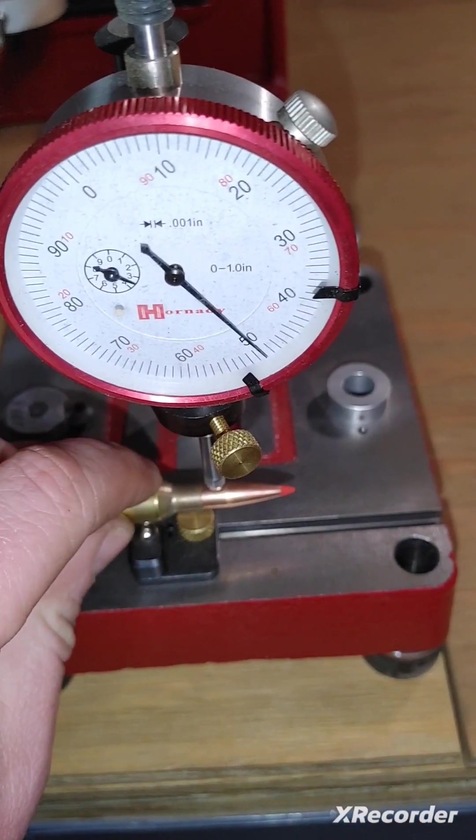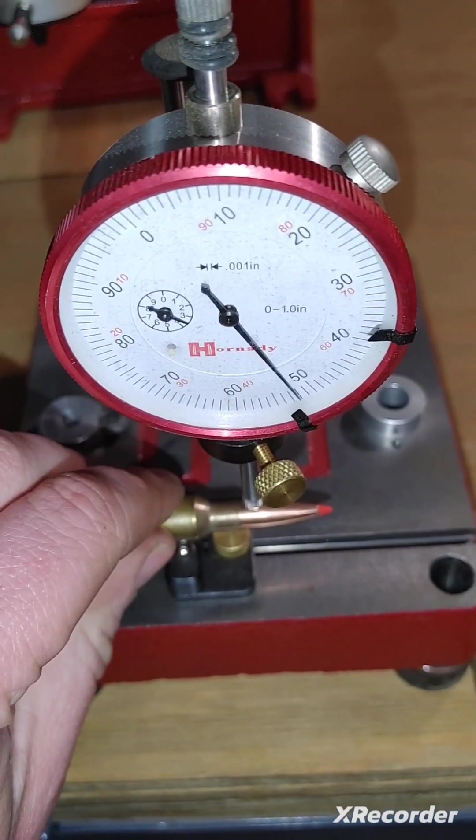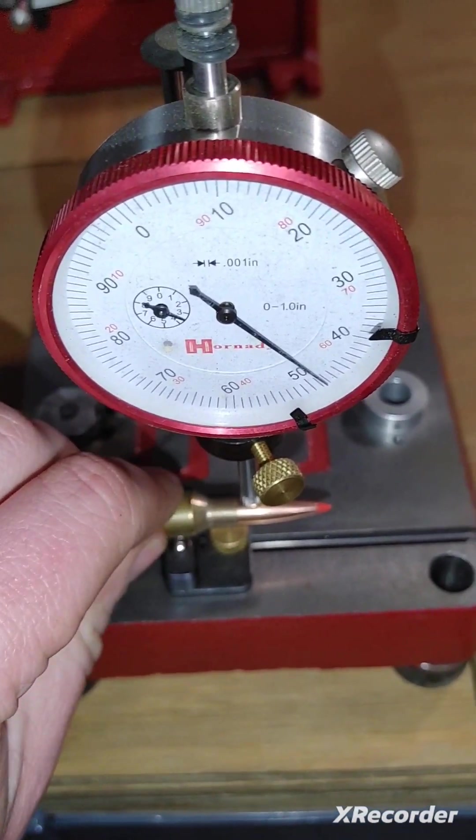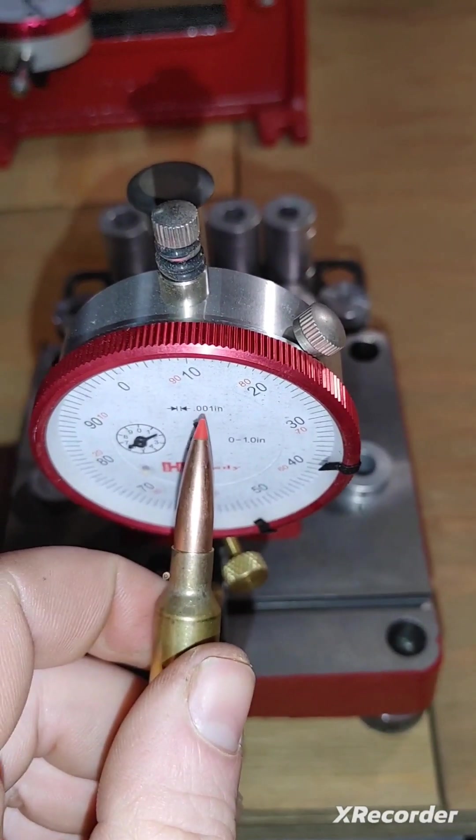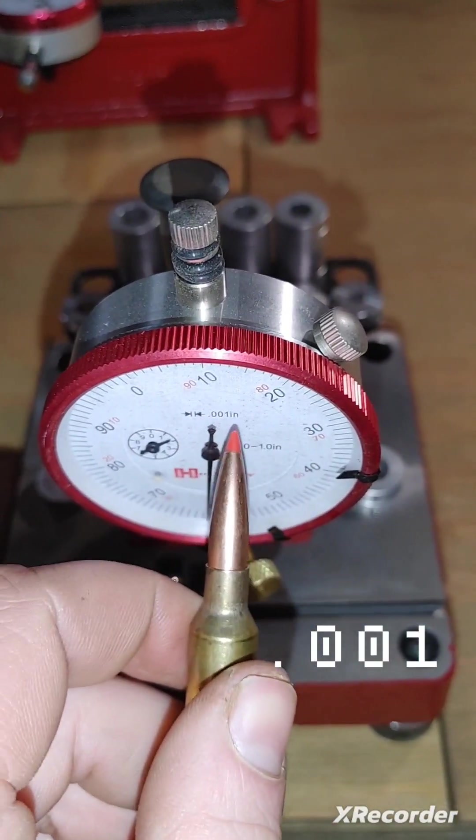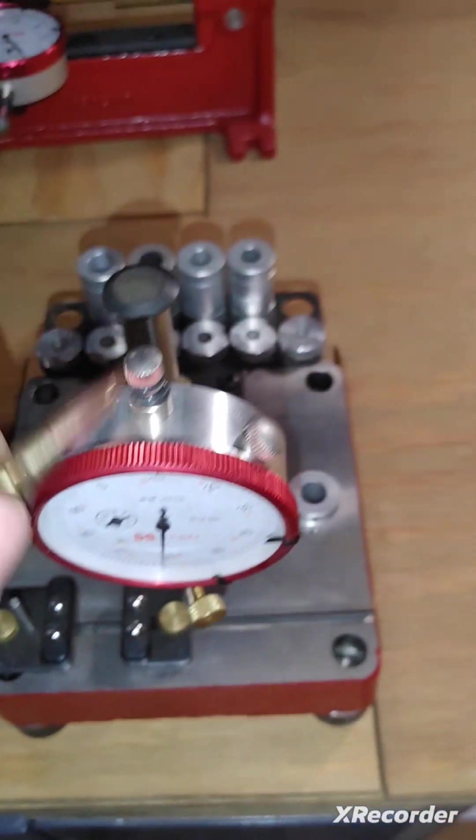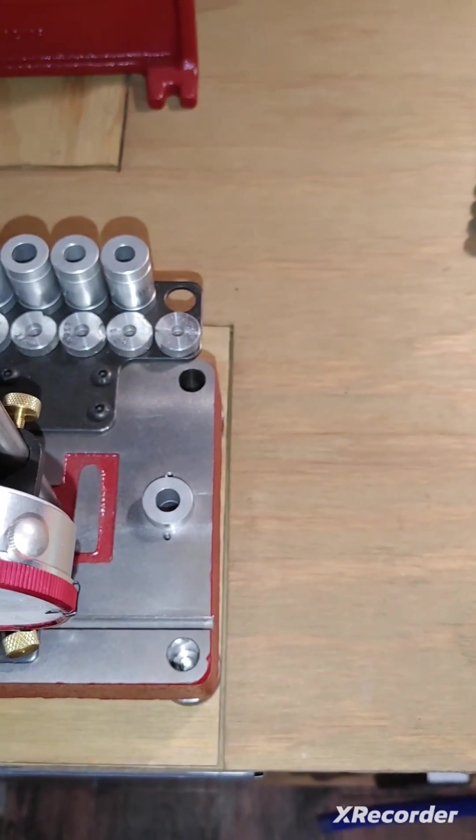Just spin the bullet. This is factory ammo so you can clearly see how much runout there is. Now this measures in one thousandths. So every line is one thousandths of an inch. And I think you can pick this up for around 270 bucks.